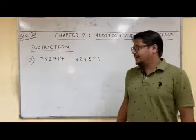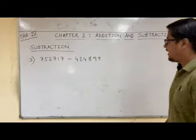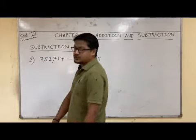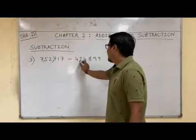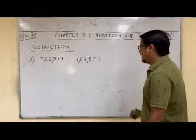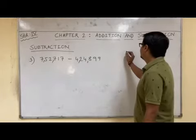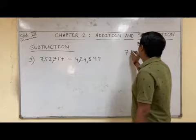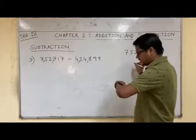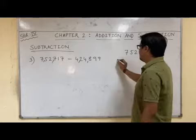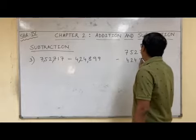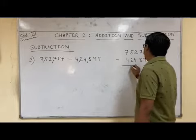I have moved to the third question: 7,52,717 minus 4,24,899. So we will write this — 7,52,717 minus 4,24,899. Please see the sketch. 7 minus 9 is possible? No. So what we will do? We will make this 17.